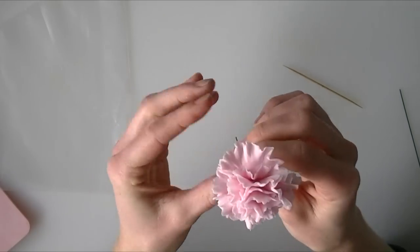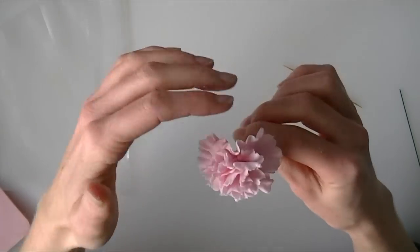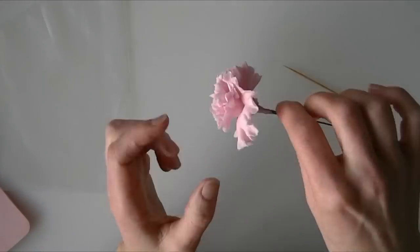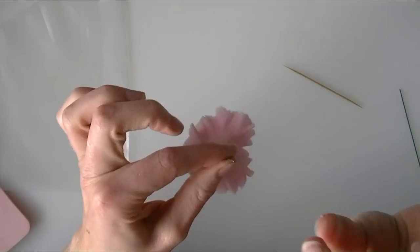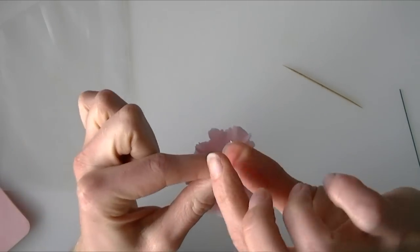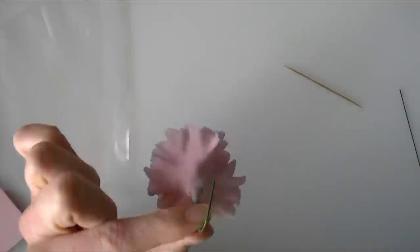Now you might find this time if you leave it drying this way up that the petals flop backwards. So you see they are starting to flop here. So this time you might want to hang them upside down. And just curl the edge of your wire to hang them onto something to let them dry.